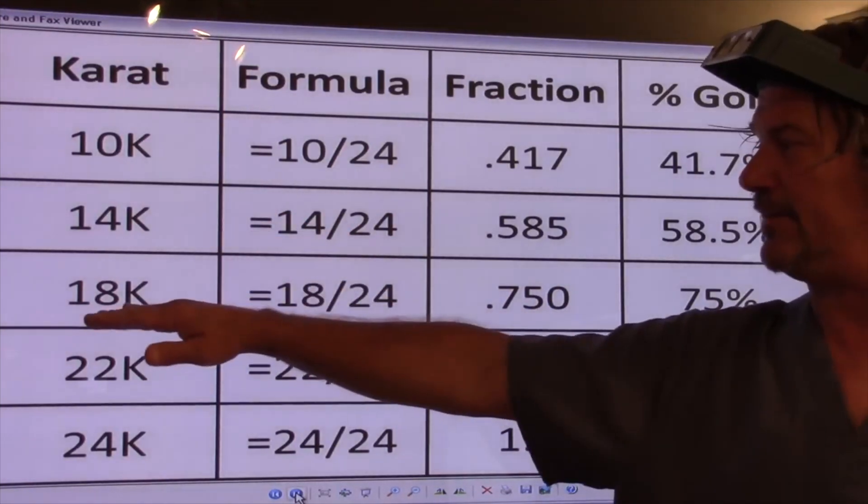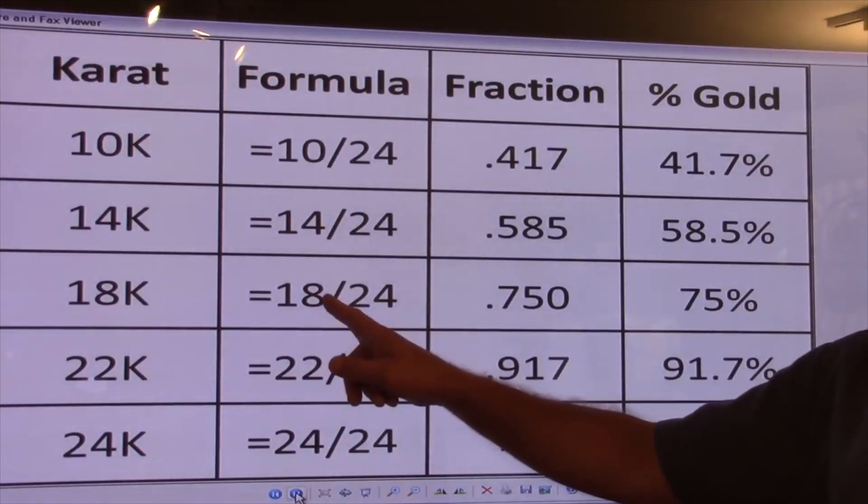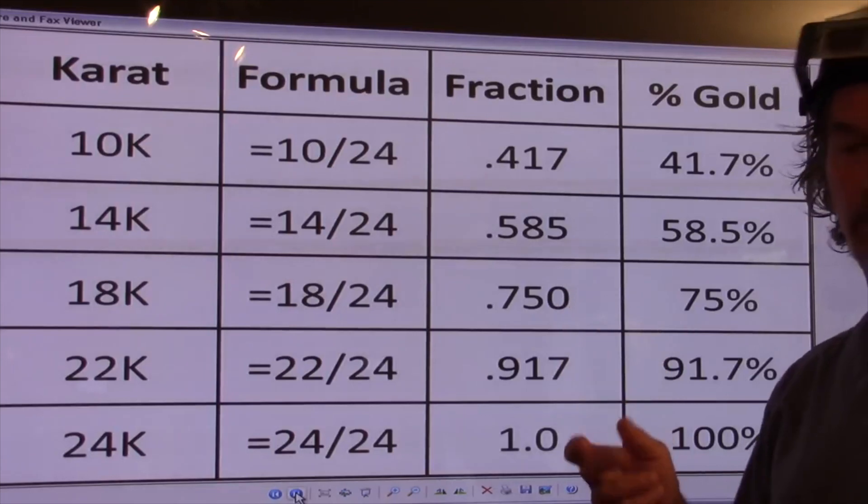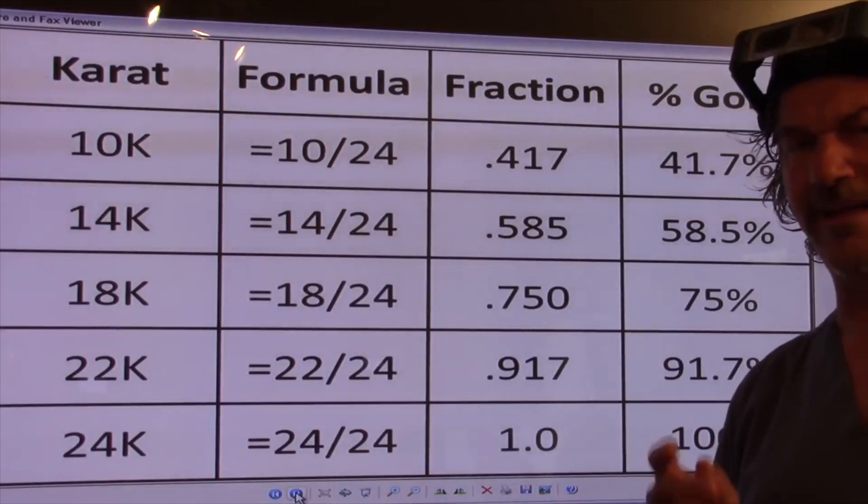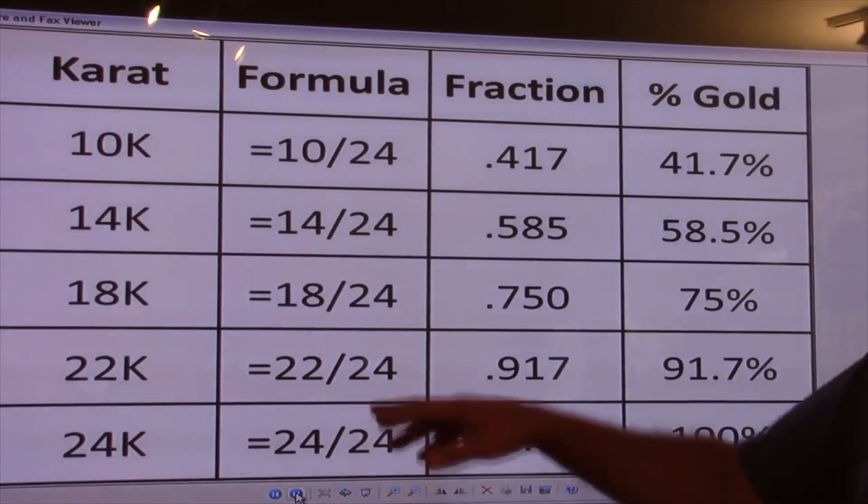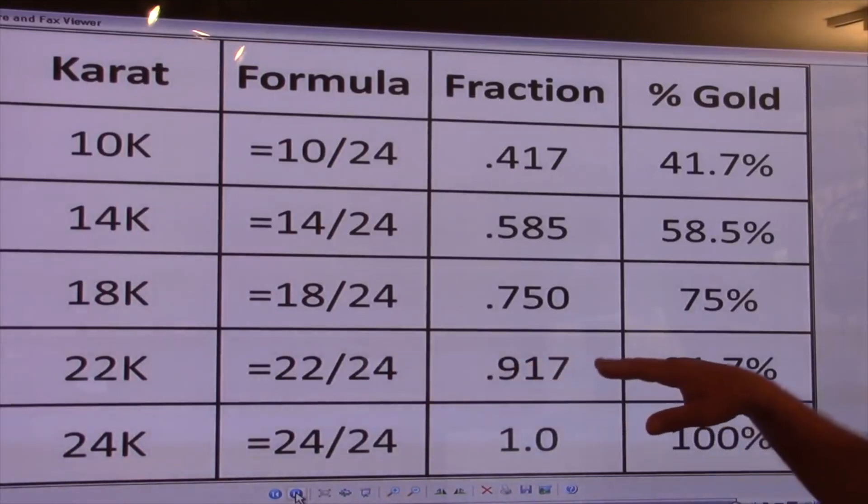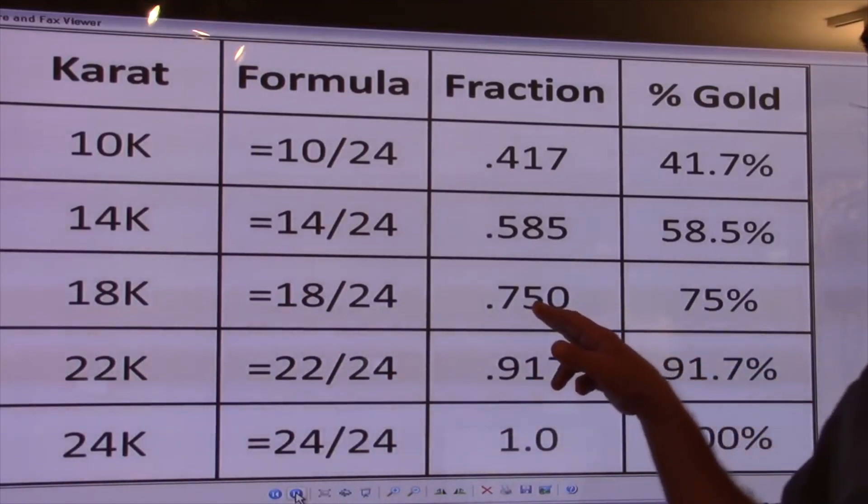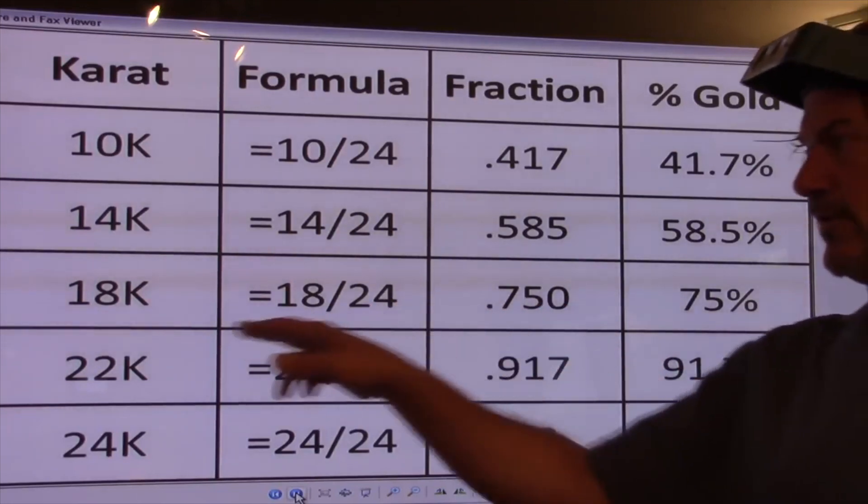When you go to 18 karat, it's got four more parts of pure gold in it. It's 18 of 24, or 75% pure. Three-quarters of the item is pure gold. So you might see 750 on the chain or on the inside of the shank. This is normally the finest gold in the United States or made for the United States audience.